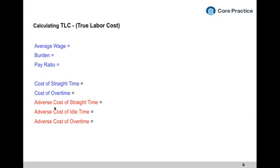There are three key considerations to true labor costs. First is average wage — I'll use $15 as an example. Second is the burden — everything from medical, dental, taxes, and fringe benefits; I'm using 35%, which is actually pretty low. Third is the pay ratio — 15% — which is total hours you pay an employee over the hours they actually work, accounting for paid time off, vacations, holidays, and paid sick leave.